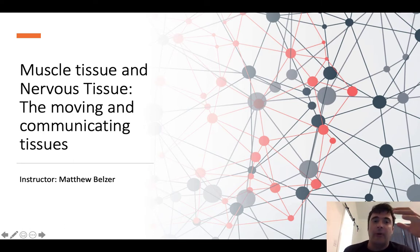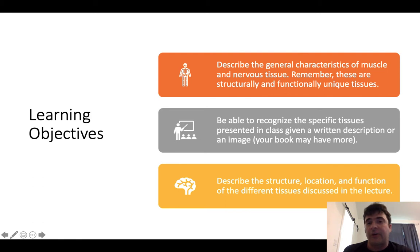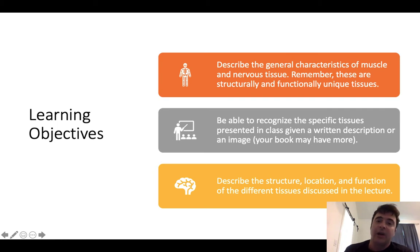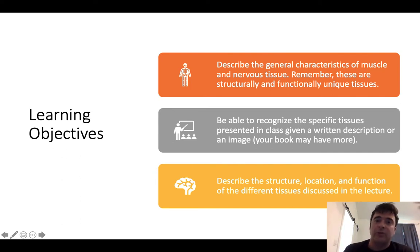Today we're going to focus exclusively on muscle tissue and nervous tissue. As always, I've given you a set of learning objectives. They're very similar for each of the different tissues because I want you to be able to describe the general characteristics, recognize the specific tissues, and describe the structure, location, and function of the different tissues. That's what we're doing with tissue histology, covered in chapter four.